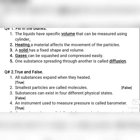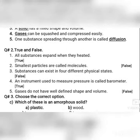Number three: substances can exist in four different physical states — this is also wrong, because substances exist in three physical states: liquid, gas, and solid. Number four: an instrument used to measure pressure is called a barometer — yes, this is true. The instrument we use to measure pressure is called a barometer.